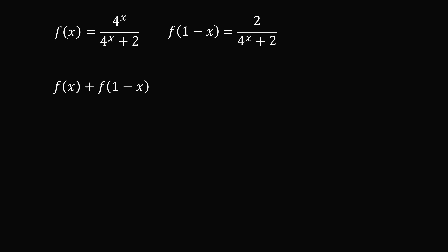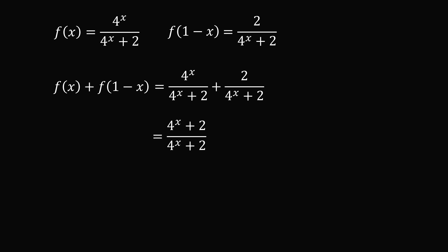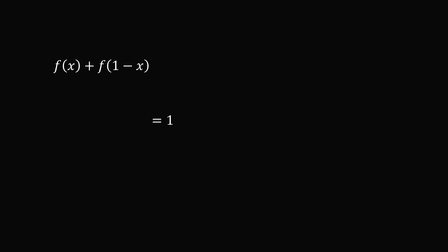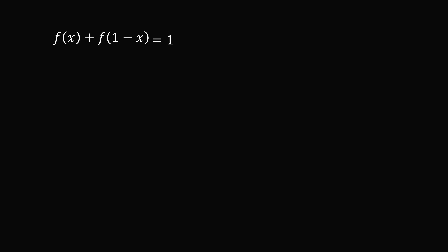If we add f of x and f of 1 minus x, the numerator will be 4 to the power of x plus 2, which is exactly the same as the denominator. So this is equal to 1. Now we can see how pairing will allow us to solve the problem.